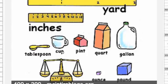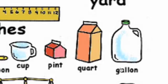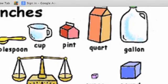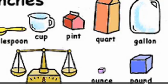A pint is equal to two cups. And a quart is equal to two pints. And a gallon is equal to four quarts. And then we also have ounces and pounds. There's 16 ounces in a pound.